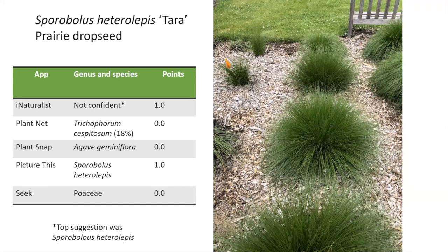This is probably the toughest picture I threw at the apps — prairie dropseed. There are no seed heads at this early stage, just a clump of grass. I honestly thought none of them would get it. iNaturalist said it wasn't confident but suggested Sporobolus heterolepis, which is prairie dropseed. PictureThis also identified it. So both got points.